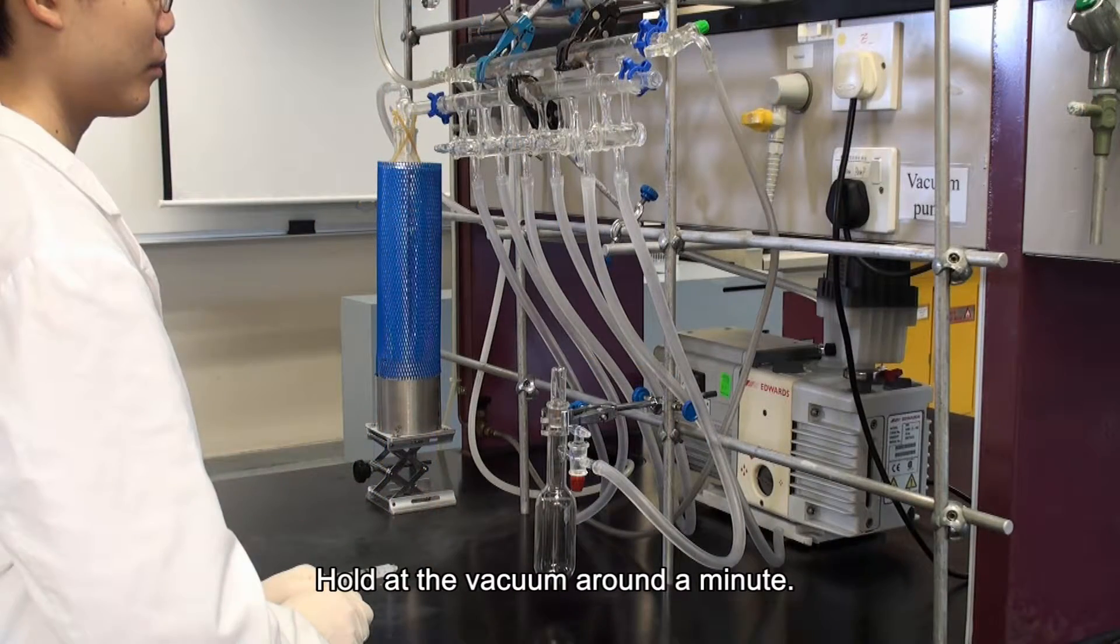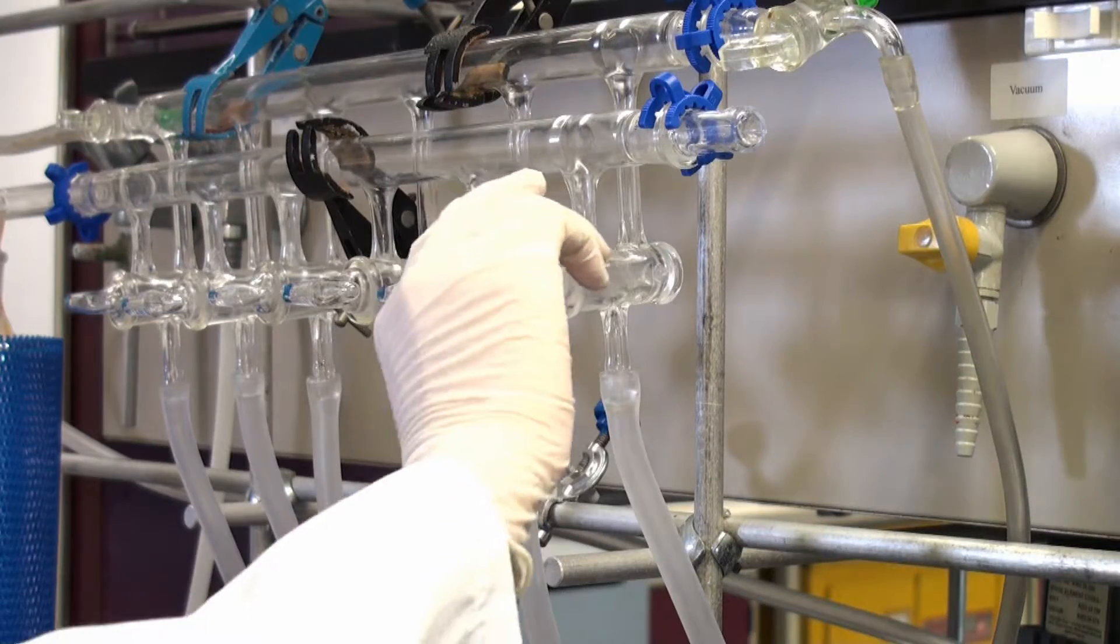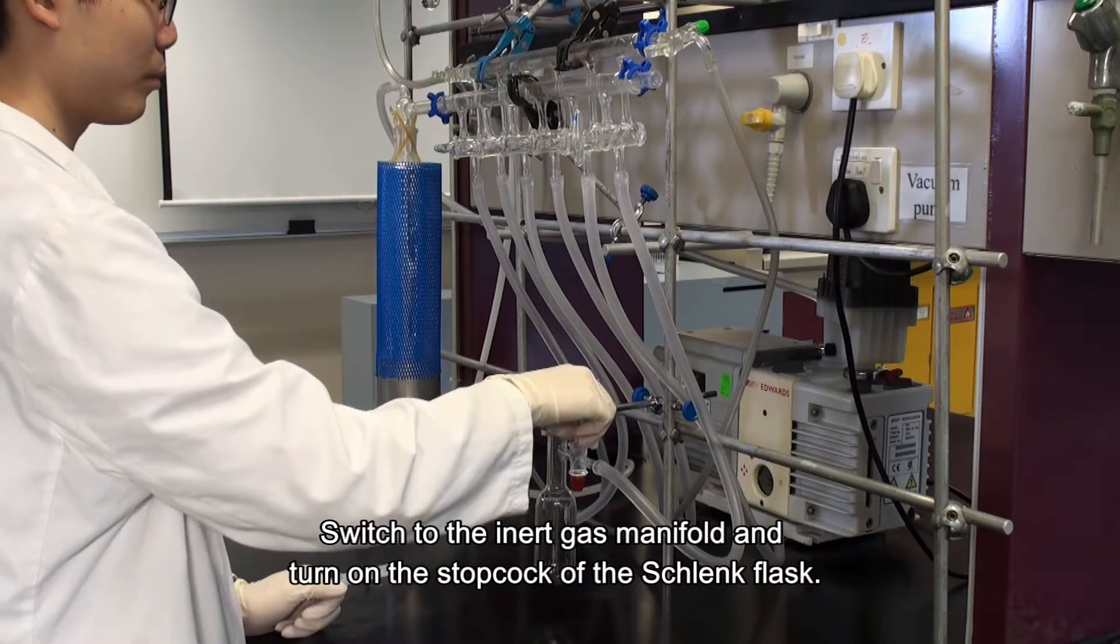Hold at the vacuum around a minute. Close the stopcock of the Schlenk flask. Switch to the inert gas manifold and turn on the stopcock of the Schlenk flask.